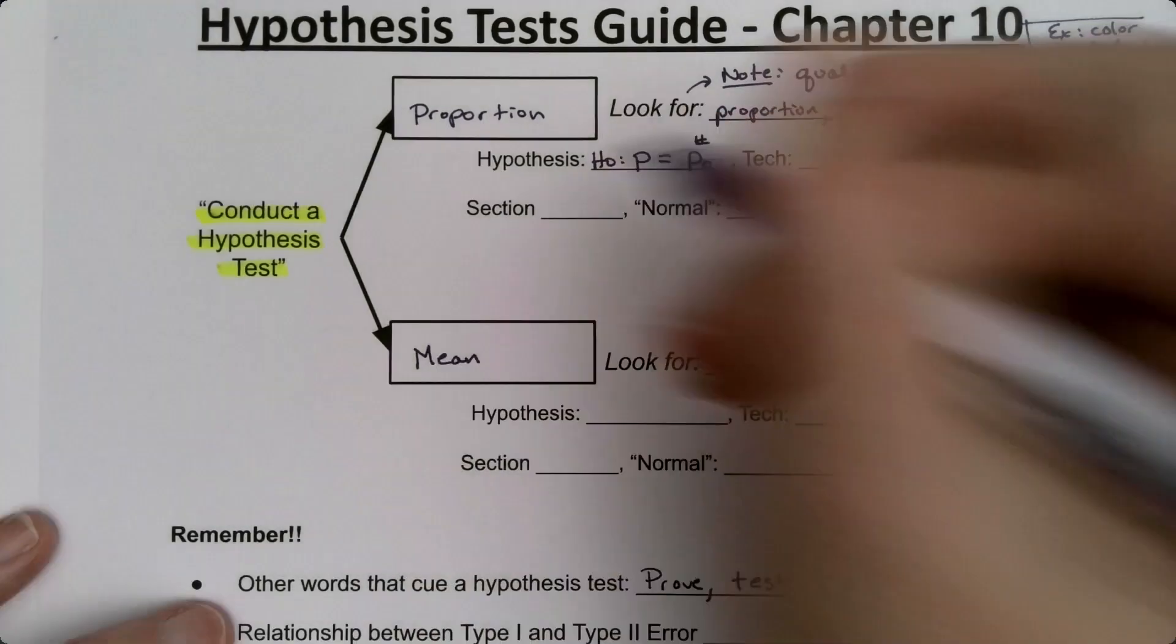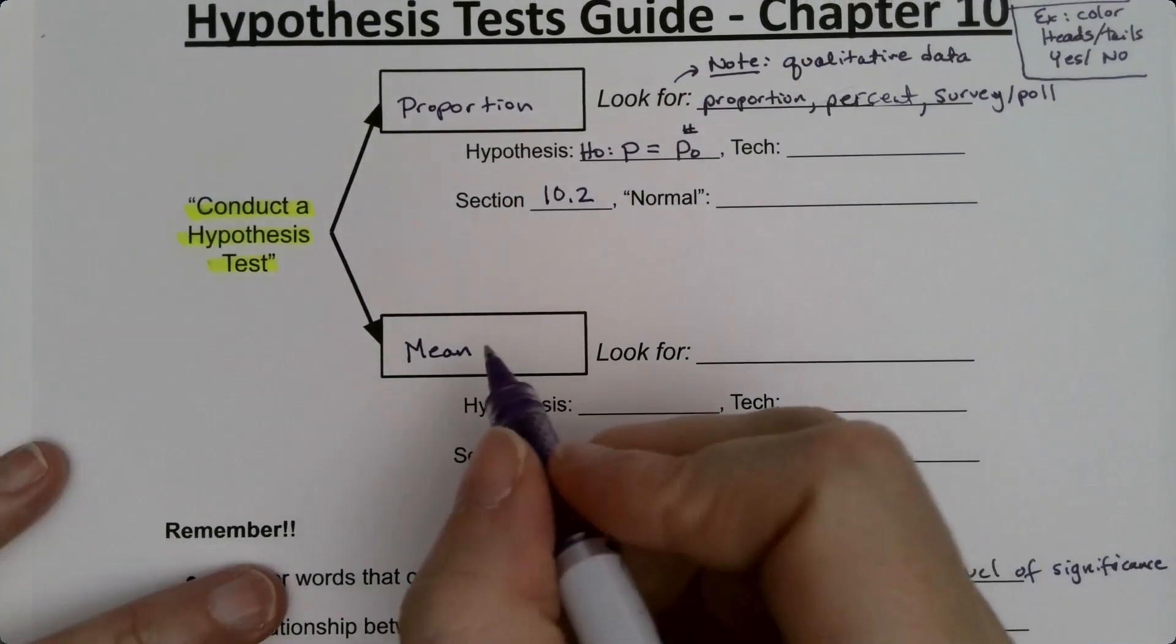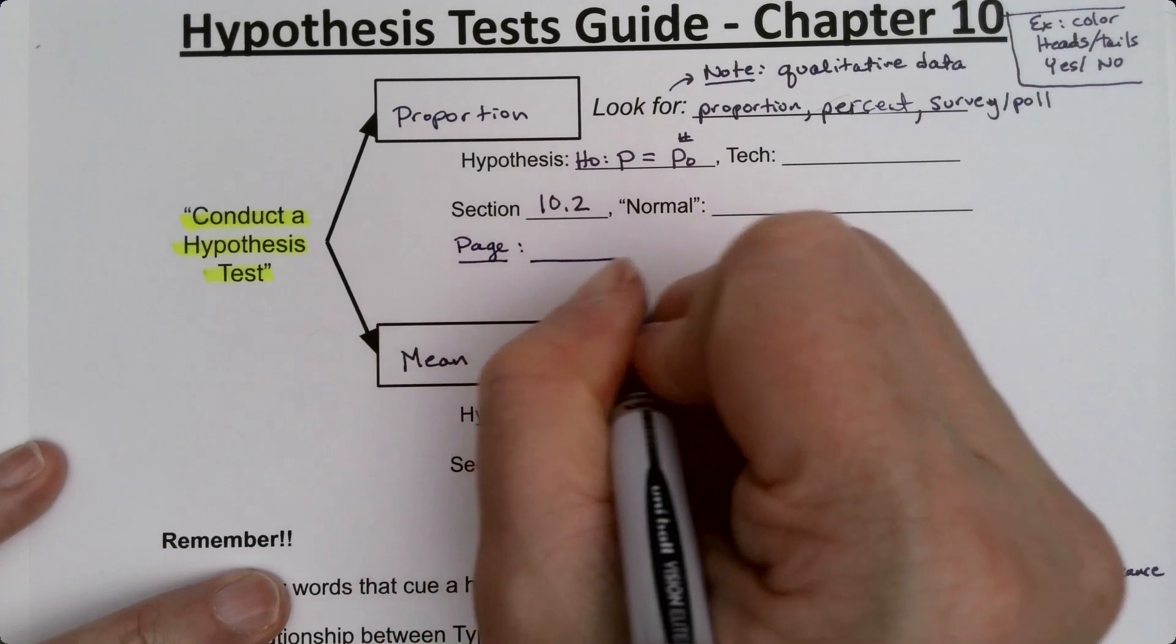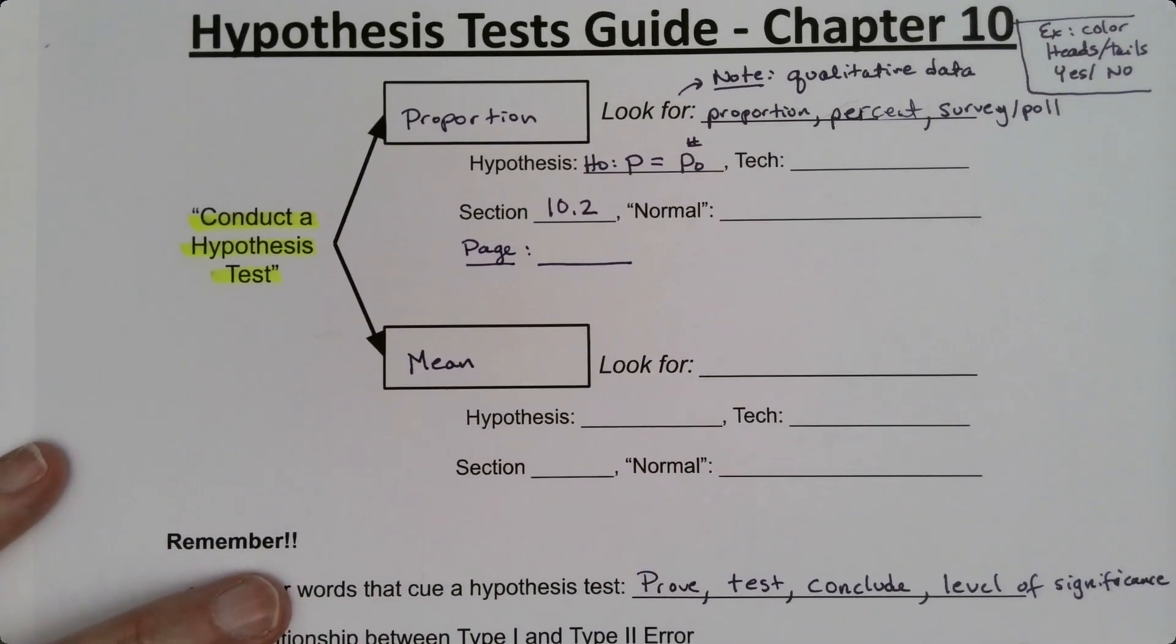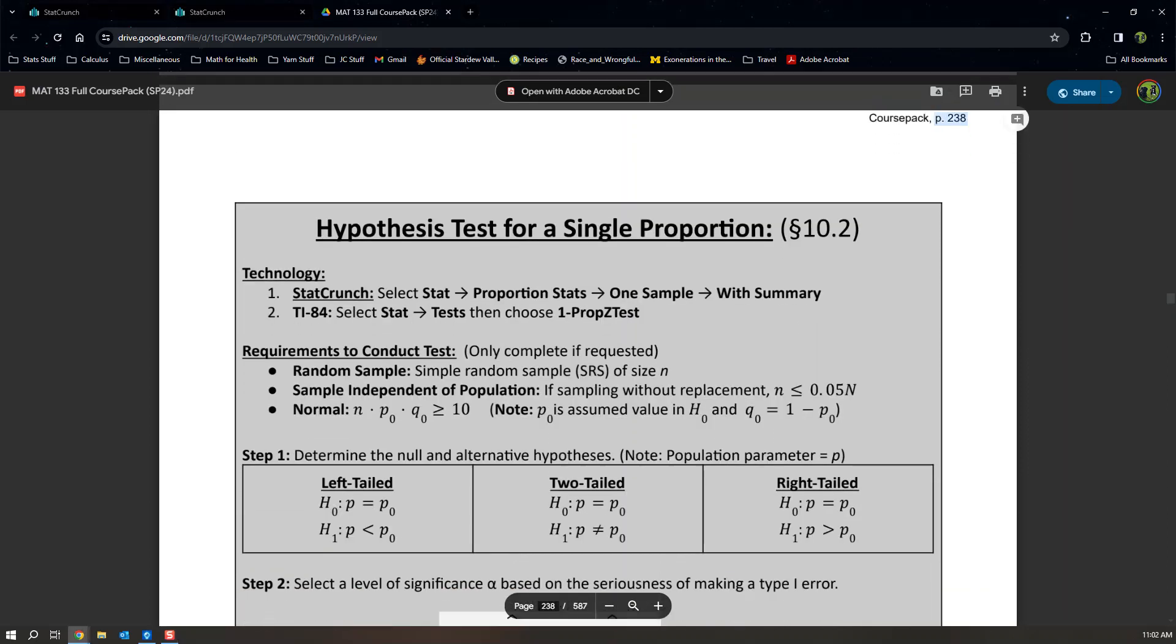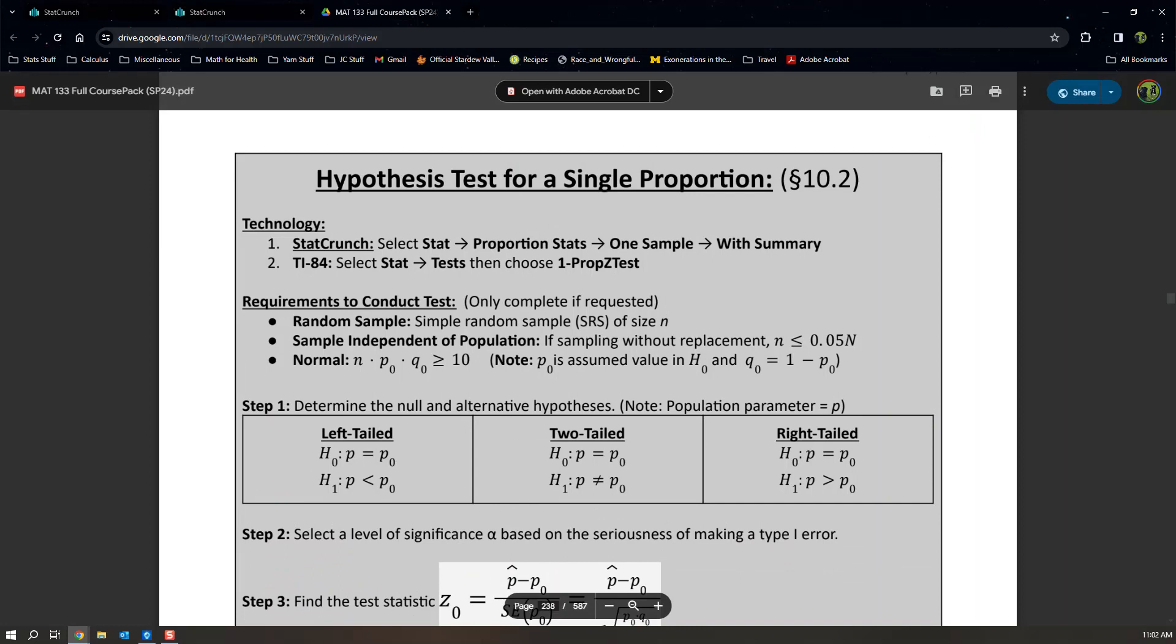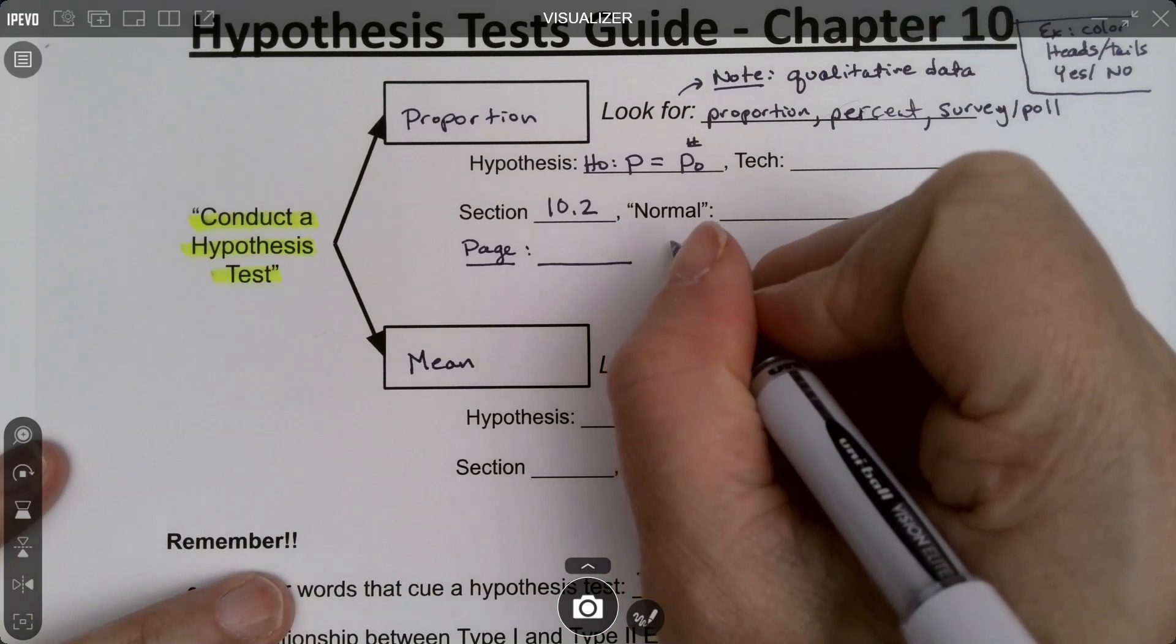This is from Section 10.2. Now, a couple of things we want to make note of. The technology on this piece—actually, before I even go there, let me write the page number. So write the page number that it is in your exam notes packet, which for me right now is page 238, but that page might change. Write the page number for you in your yellow packet, in your exam notes packet. Put that page number in there and then save for yourself your test statistic.